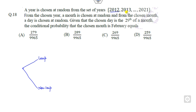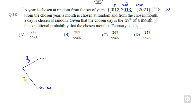How many leap years are there? There are 10 years total. The leap years are 2012, 2016, and 2020 — so there are three leap years. The probability of a leap year is 3/10, and the rest (non-leap years) have probability 7/10.